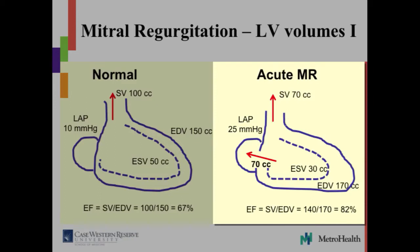Usually these people are significantly in distress — they end up intubated and we have to do things to help them. Looking at the ejection fraction: you go from 170 to 30, stroke volume is 140. 140 divided by 170 gives an ejection fraction of 82% — hyperdynamic, trying to get rid of that extra volume. This is acute mitral regurgitation.